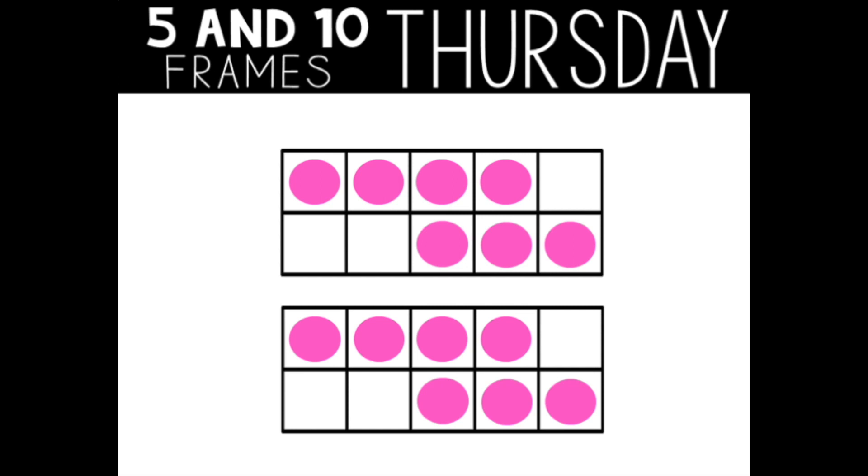Or I could mentally move three dots from the bottom 10-frame up to the top 10-frame. That would give me 10 in the top and four in the bottom. Did you figure out the number a different way?